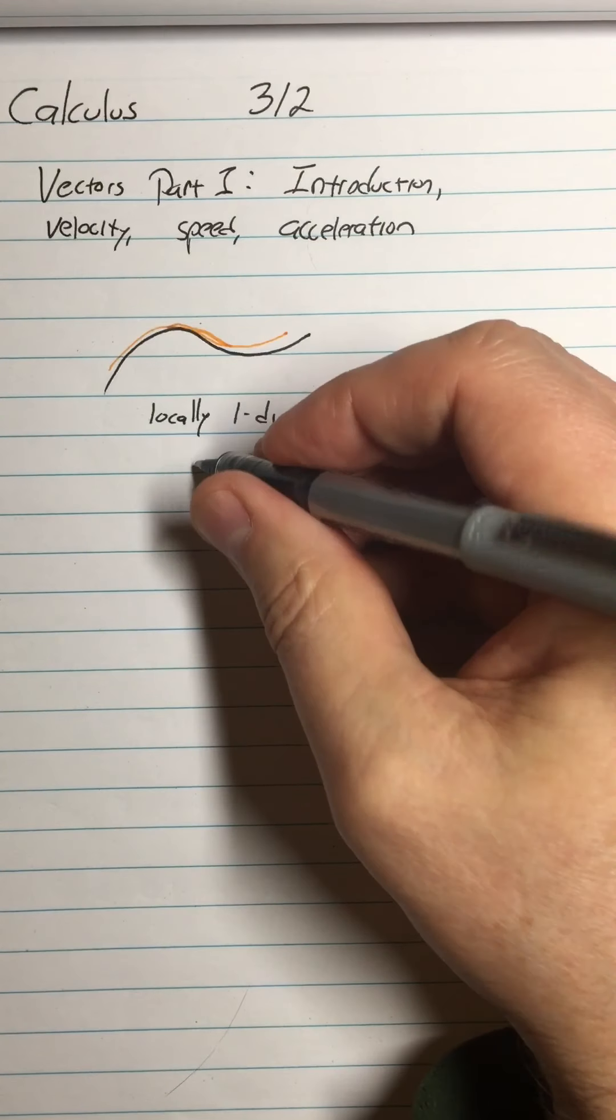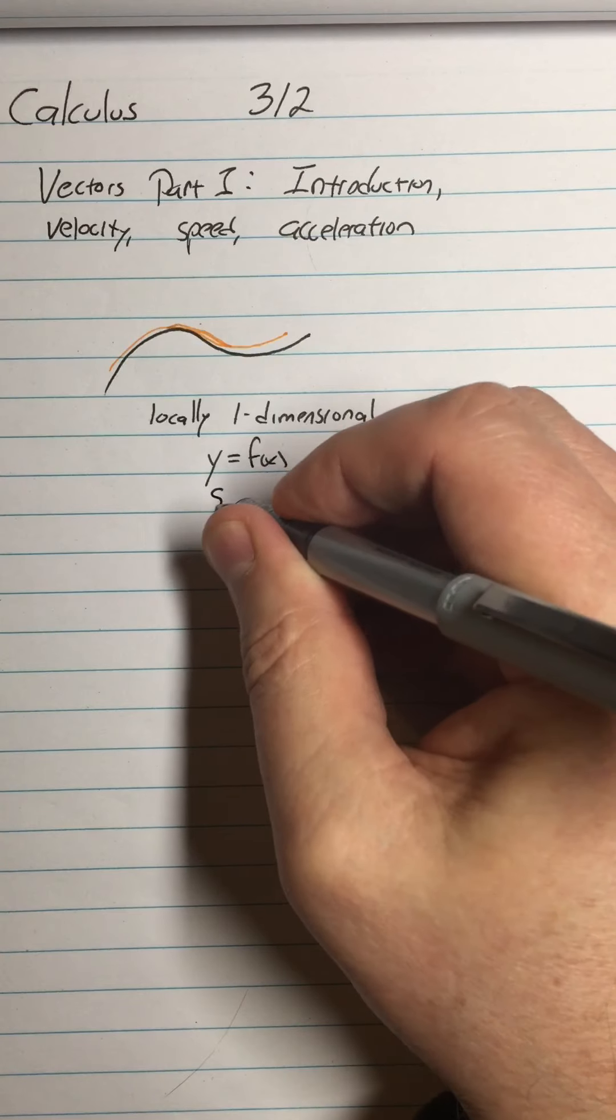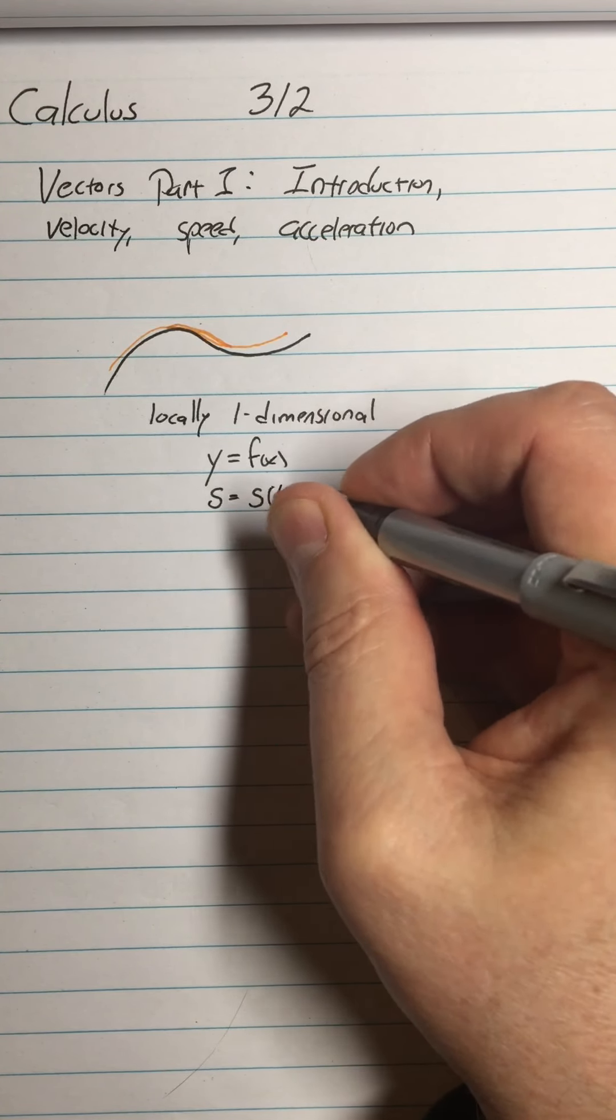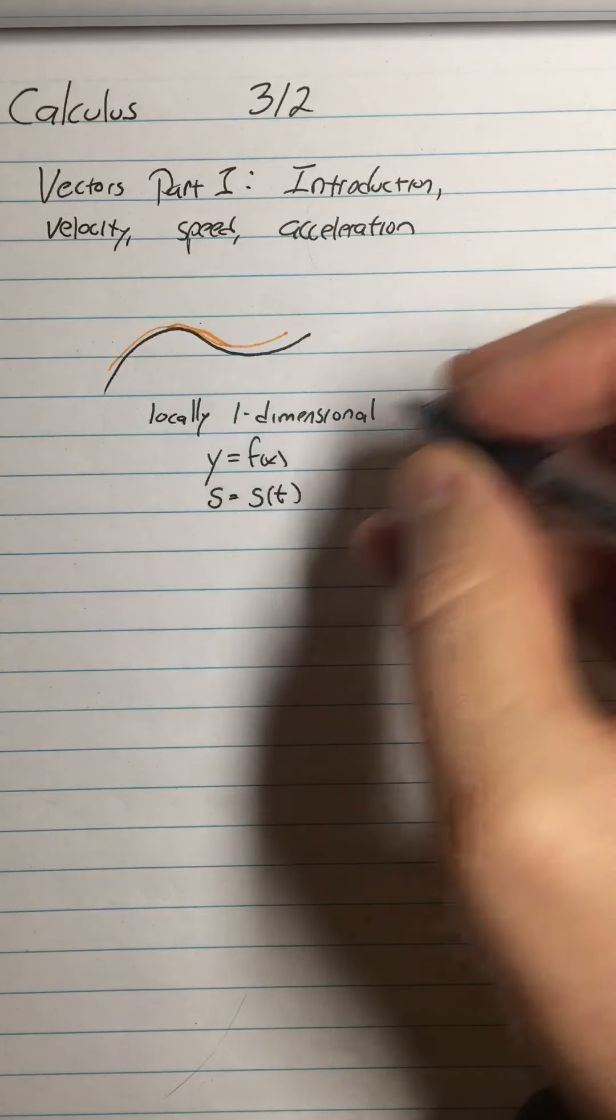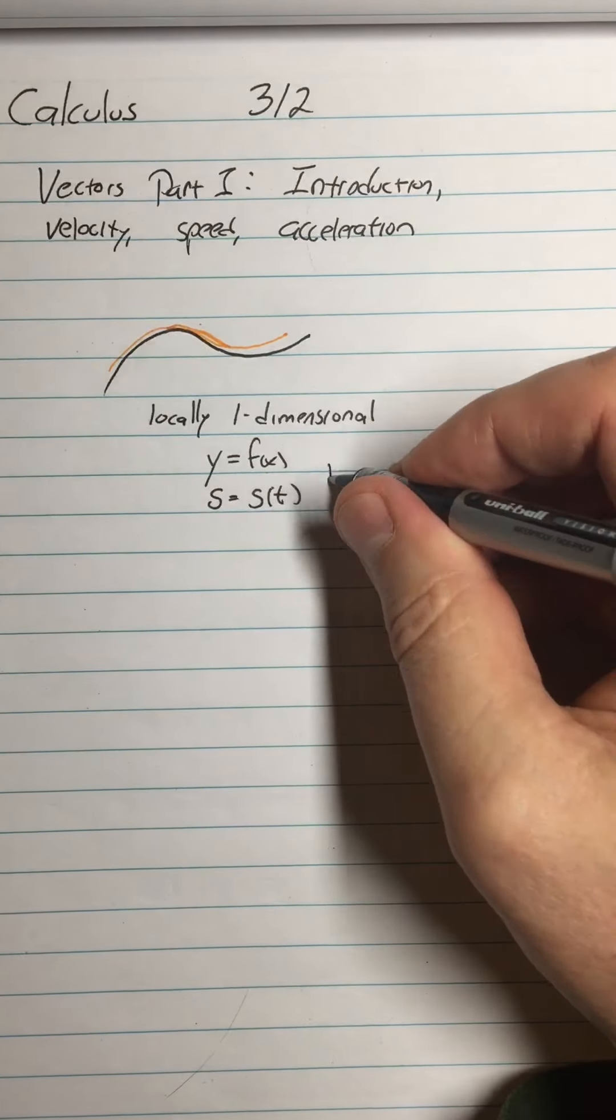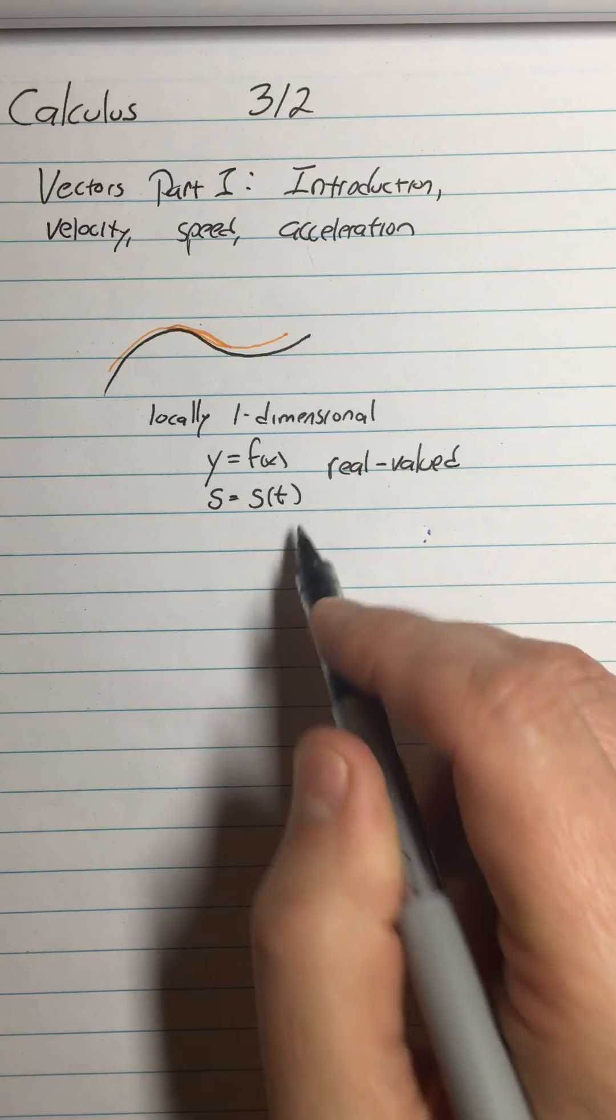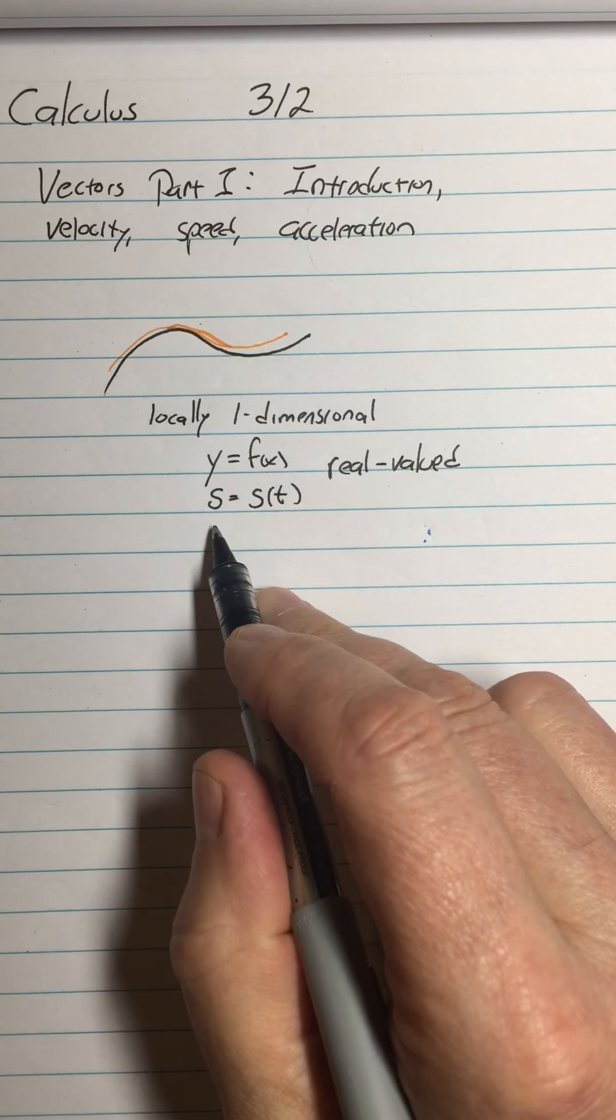So that's what we can do with functions like y equals f of x or position equals some function of time. So these are real valued functions. We call them real valued functions because their variables are real numbers and their outputs are real numbers.